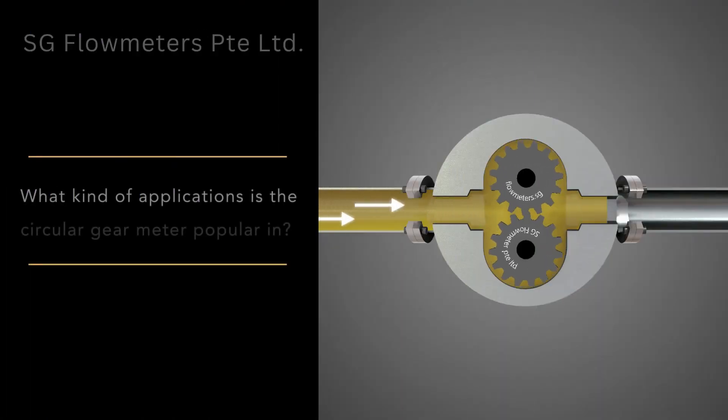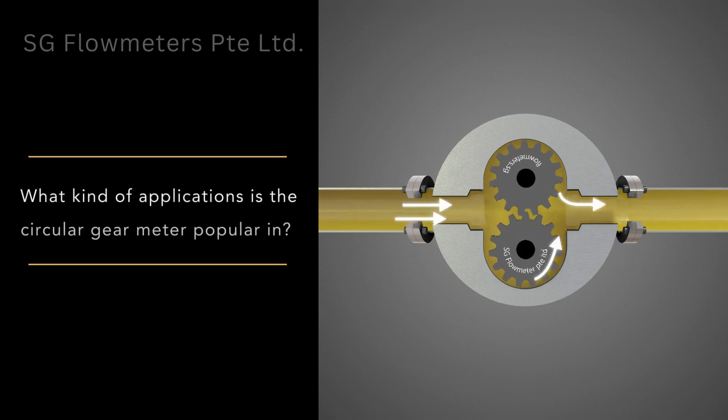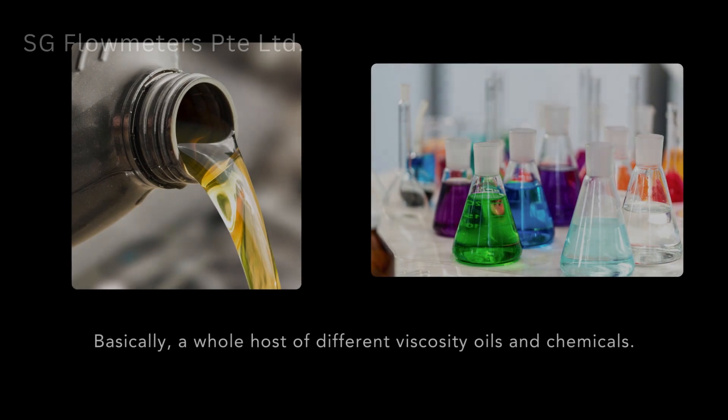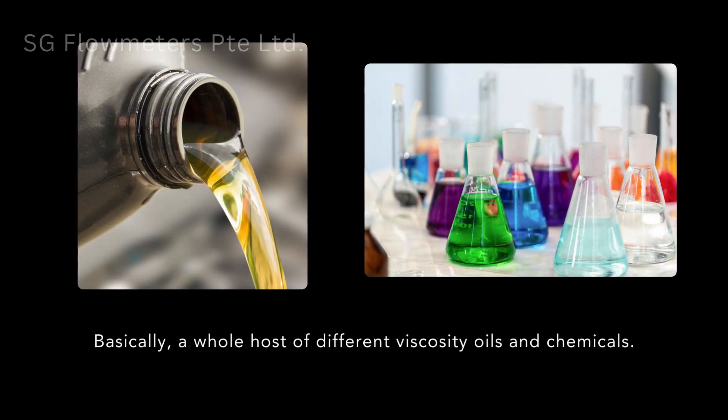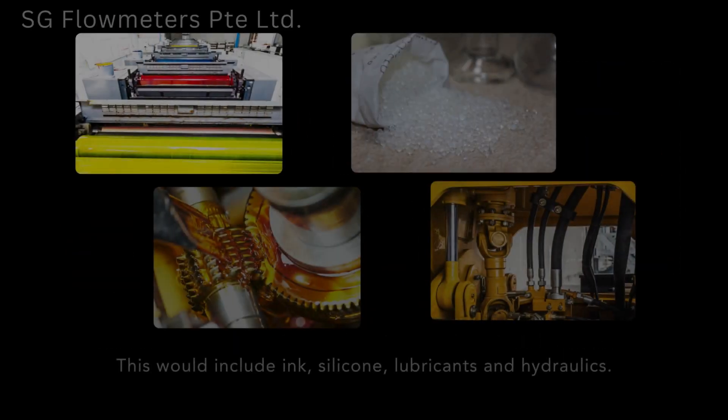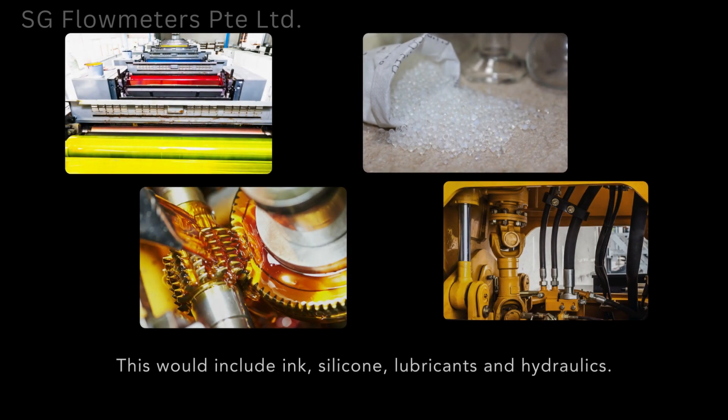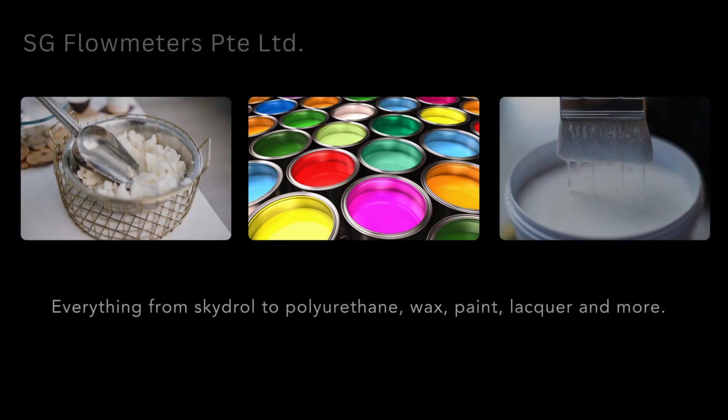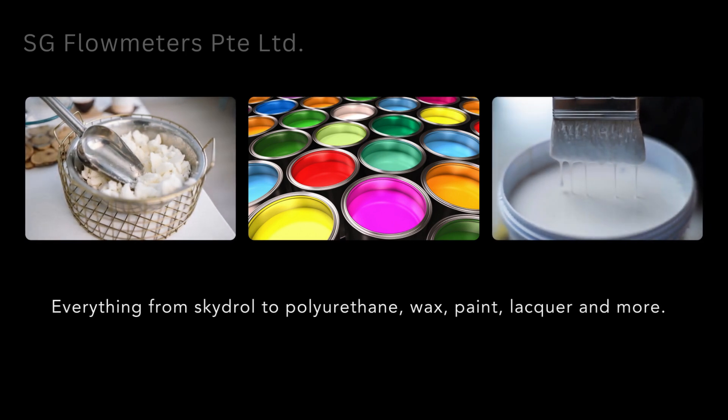What kind of applications is the circular gear meter popular in? Basically, a whole host of different viscosity oils and chemicals. This would include ink, silicone, lubricants, hydraulics, everything from SkyDrawl to polyurethane, wax, paint, lacquer, and more.